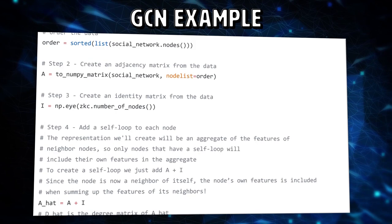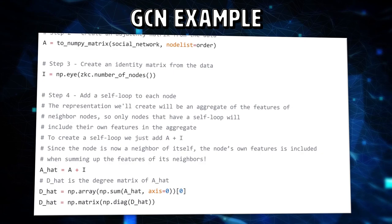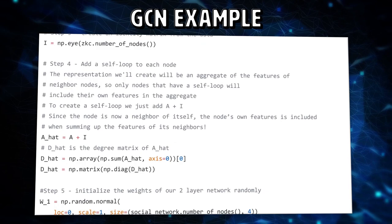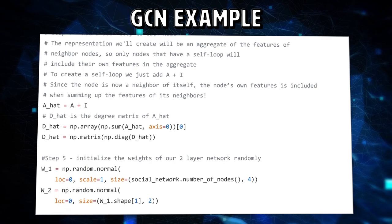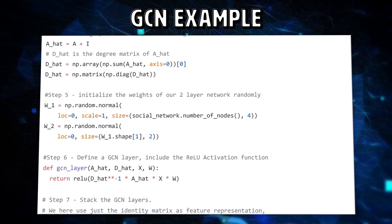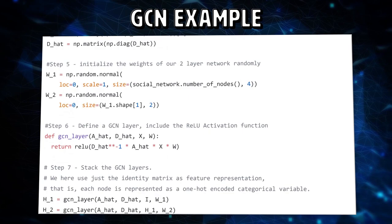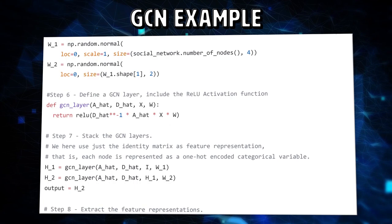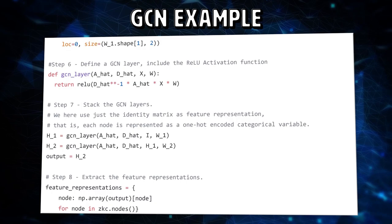Our GCN will take as input a feature matrix that includes the number of nodes and the number of input features for each node. It also takes as input the matrix representation of the graph structure. Each hidden layer of the network corresponds to a feature matrix where each row is a feature representation of a node. At each layer, these features are aggregated to form the next layer's features using a propagation rule. So features become increasingly more abstract at each consecutive layer. Our simple propagation rule consists of the weight matrix for a layer and a nonlinear activation function, RELU. So the size of the second dimension of the weight matrix determines the number of features in the next layer.